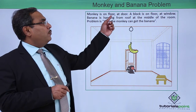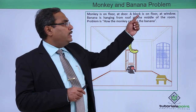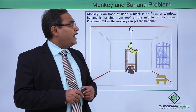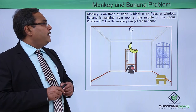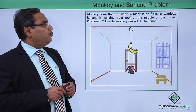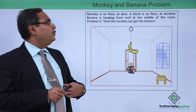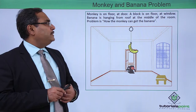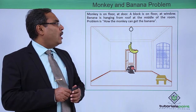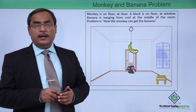Monkey is on floor at door, the block is on floor at window, and the banana is hanging from the roof at the middle of the room. The problem is how the monkey can get the banana.